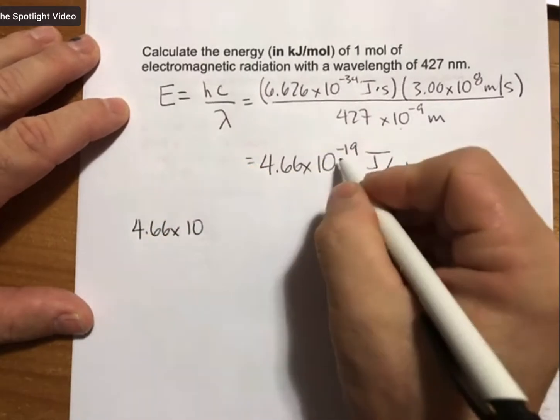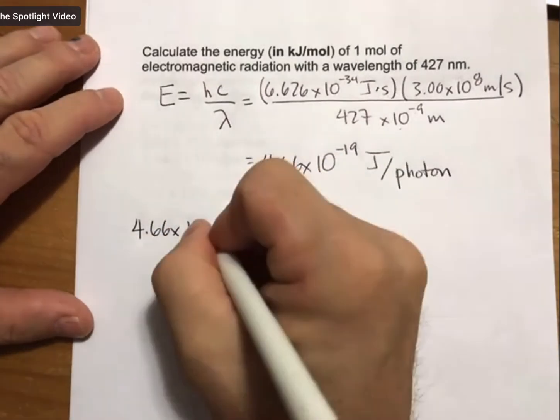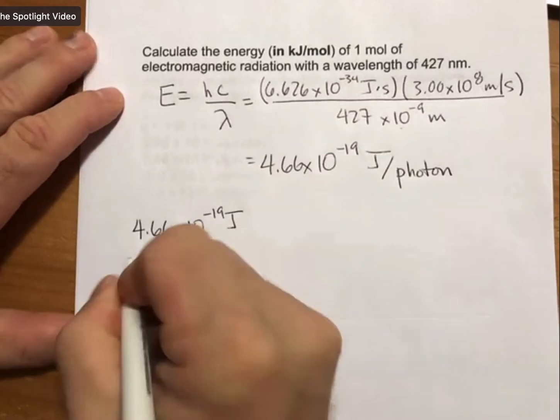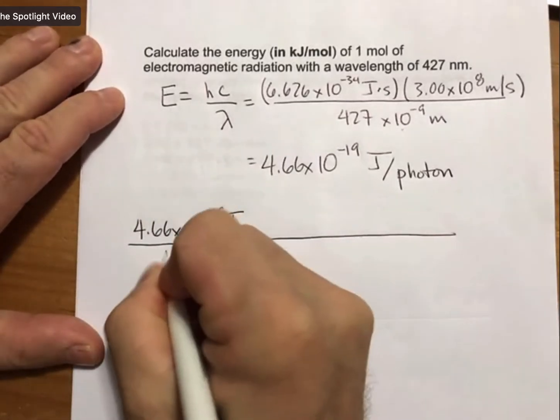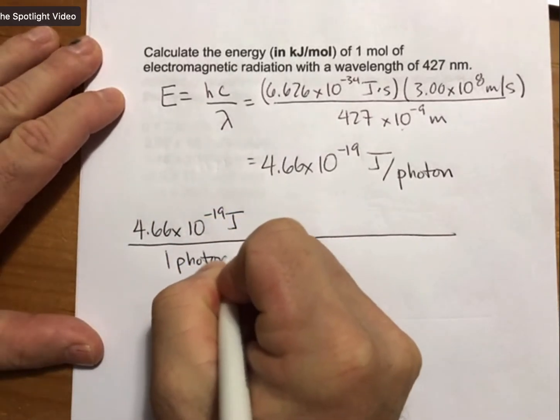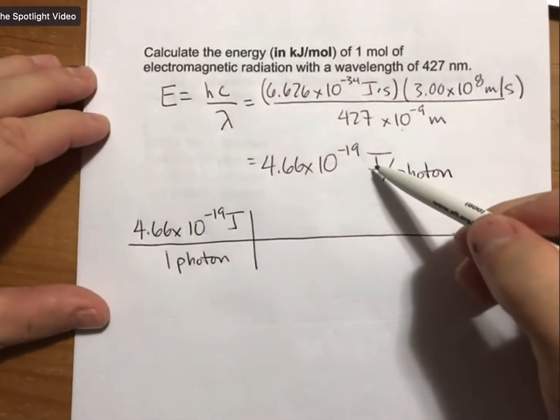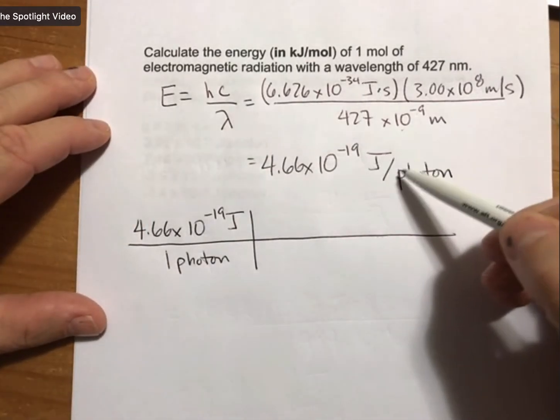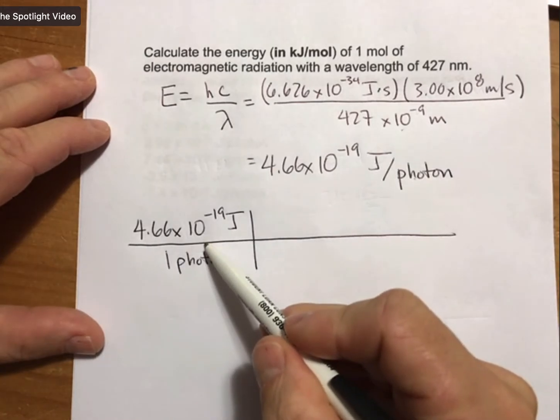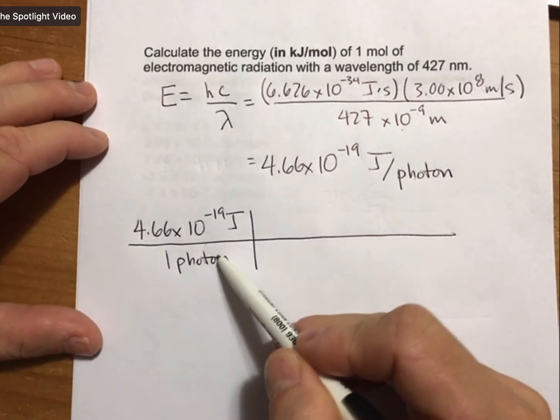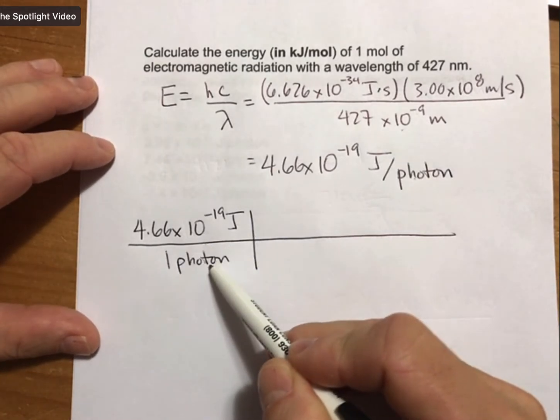So starting with 4.66 times 10 to the minus 19. And here, this has a numerator and a denominator. So in my unit conversion problem, I will set it up like that. I have joules per photon.